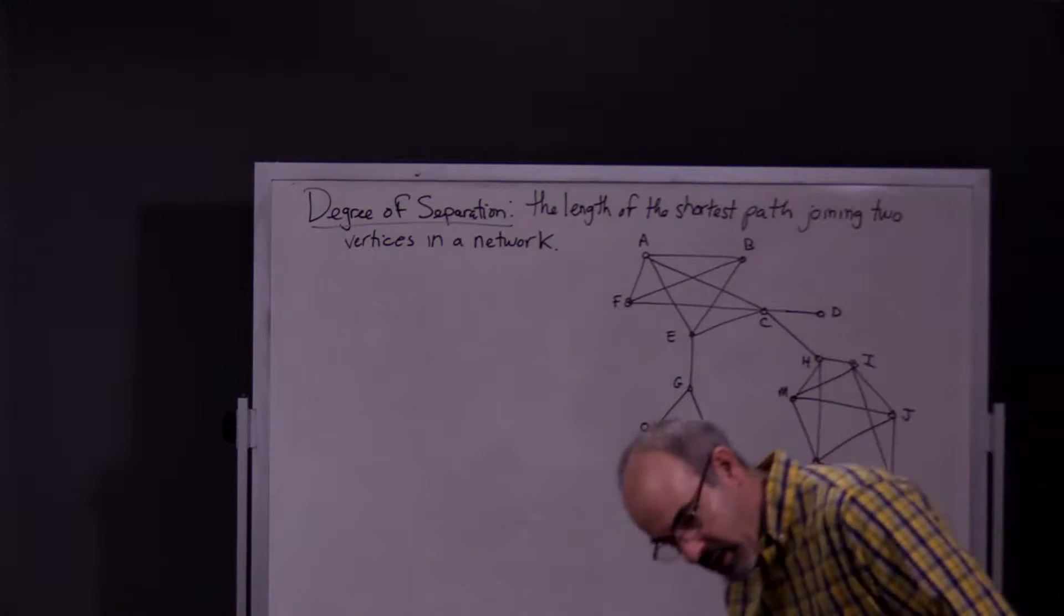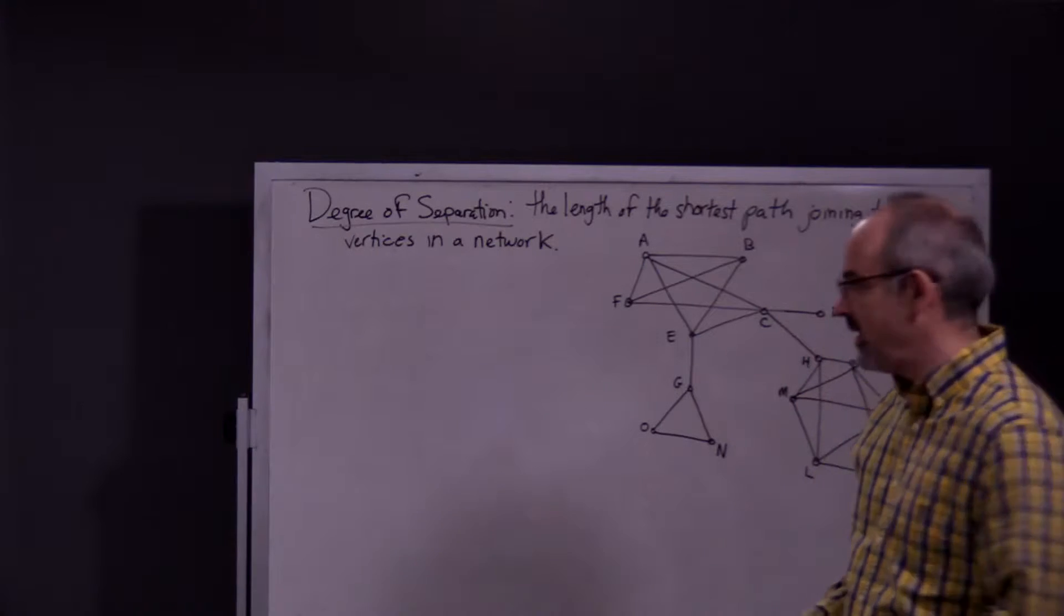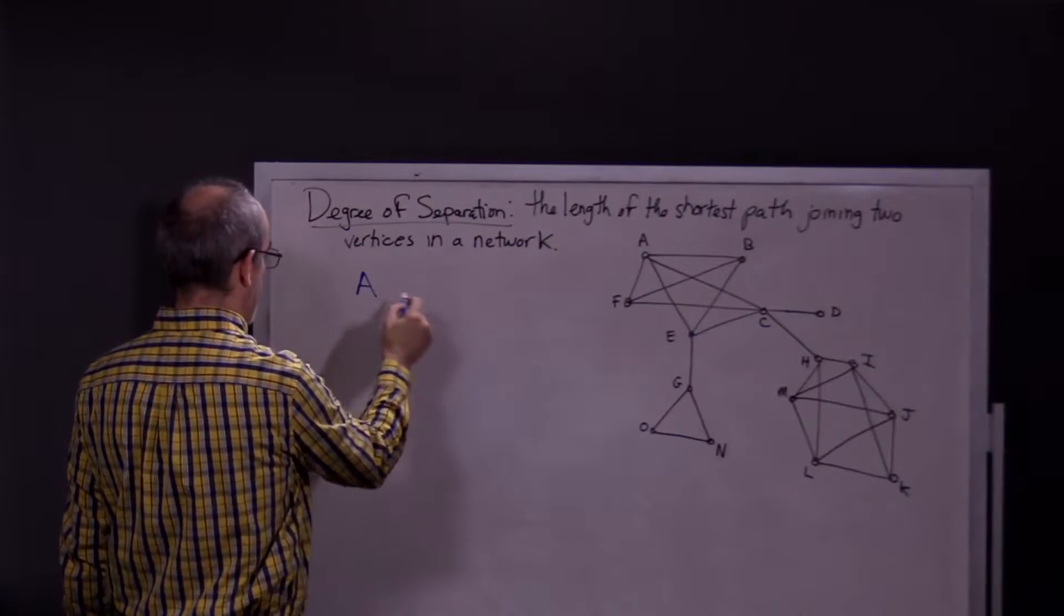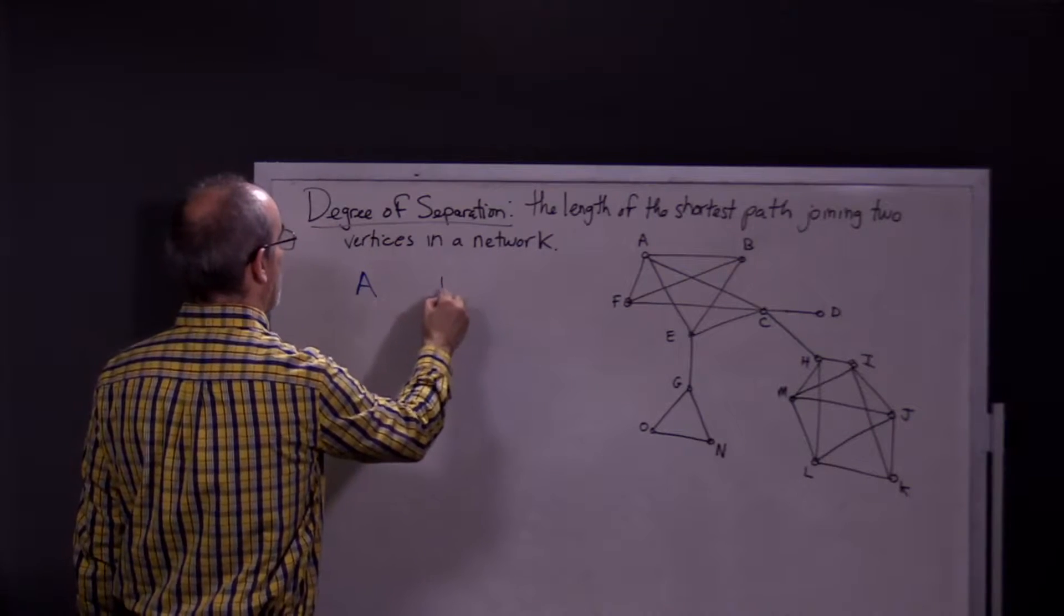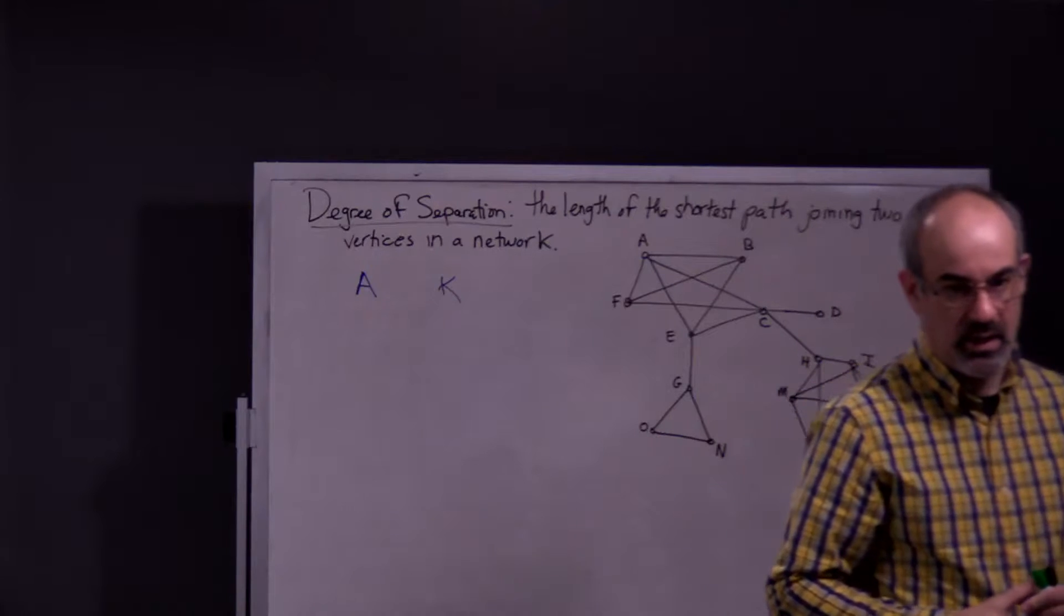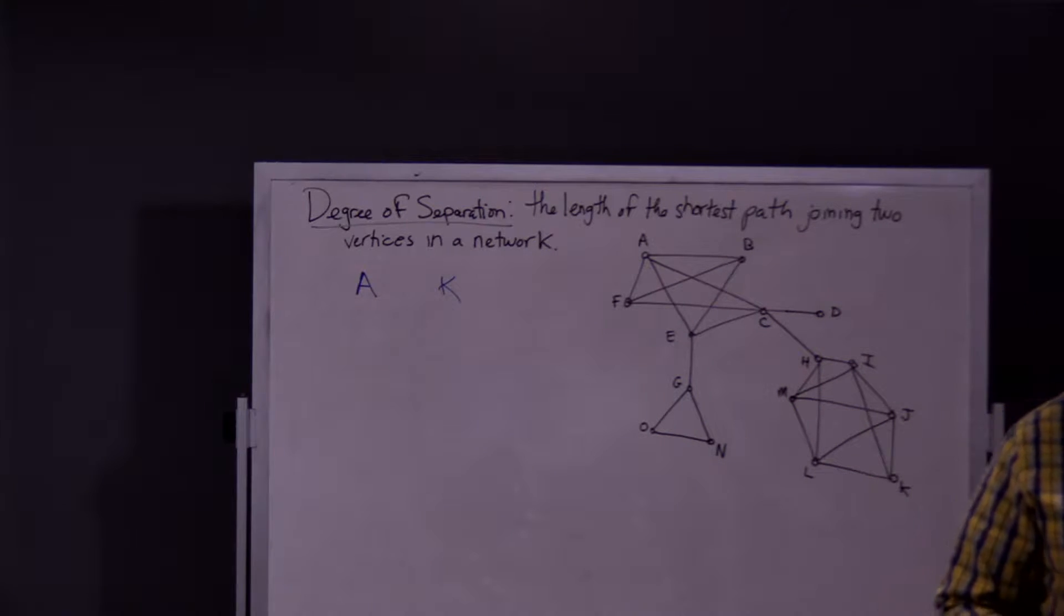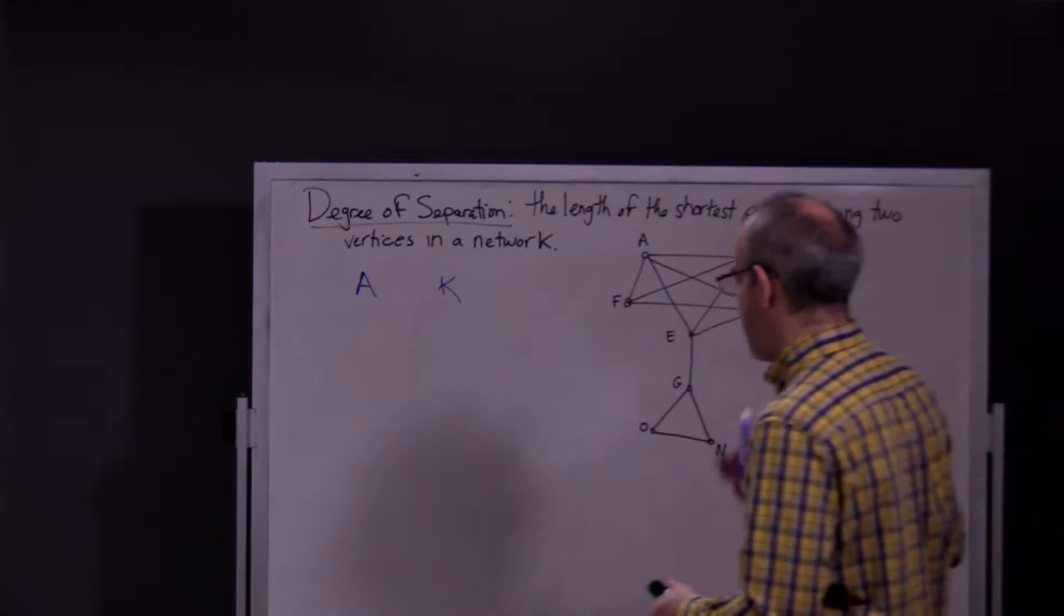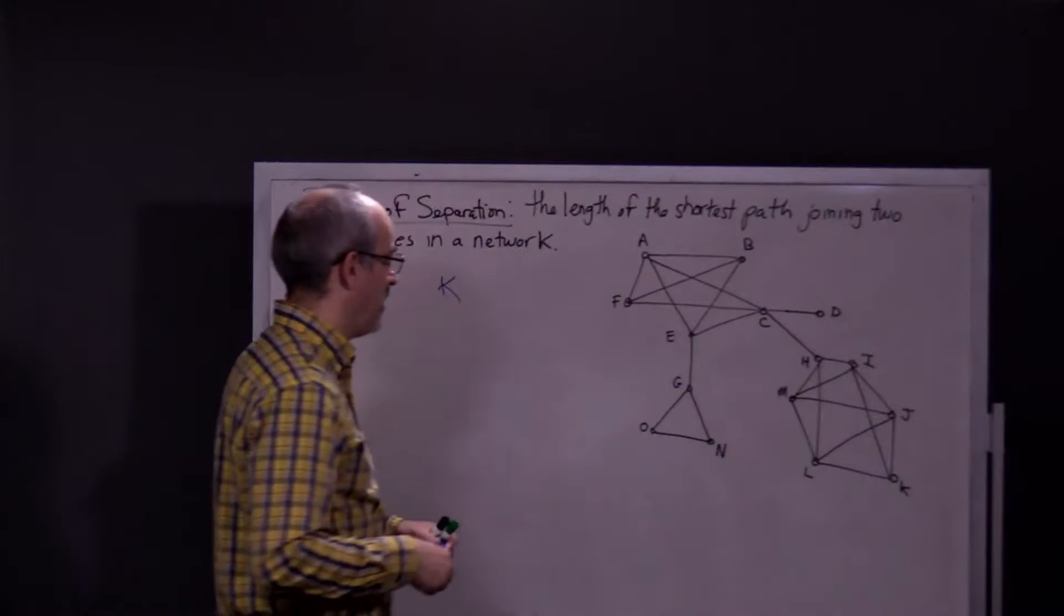So degree of separation is just the length of the shortest path joining two vertices in a network. So let's randomly pick, and it's not really going to be random, but without looking at the graph, I'm going to pick A and K. And I want to know the degree of separation between A and K. What that means is I want to find the shortest path between A and K, the path length, the shortest path length between A and K.